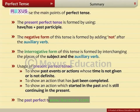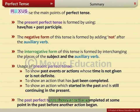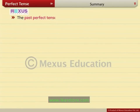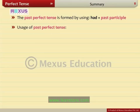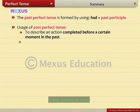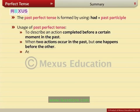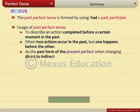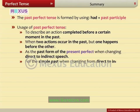The past perfect tense shows an action completed at some point in the past before another action began. It is formed by using had plus past participle. Usage: to describe an action completed before a certain moment in the past; when two actions occur in the past but one happens before the other; as the past form of the present perfect when changing direct to indirect speech; and for the simple past when changing from direct to indirect speech.